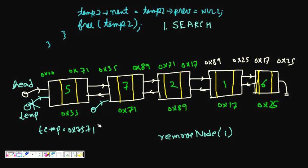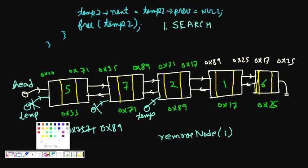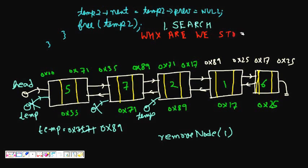Again, is temp->next->data which is 2 equal to 1? No, so temp = temp->next, and we move to node 2. Now again it checks: is temp->next->data which is 1 equal to 1? Yes, so we stop the while loop. Now our temp is here — one node before the node we want to delete.